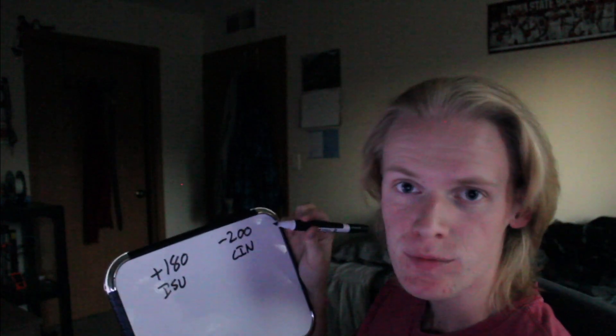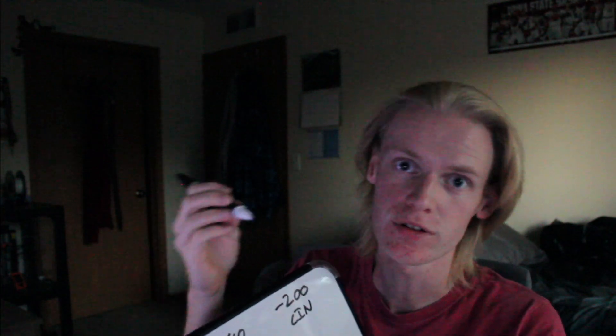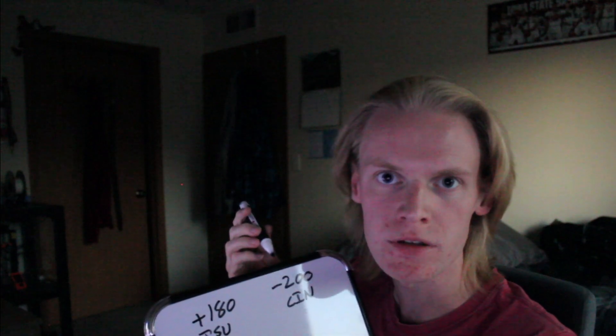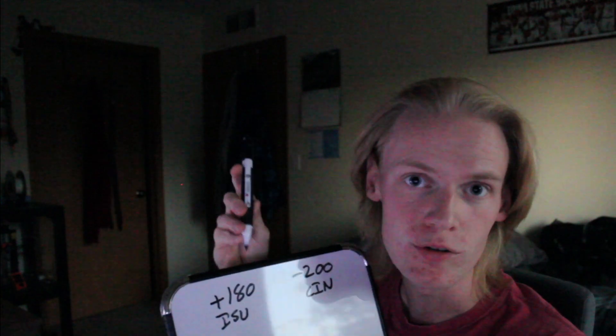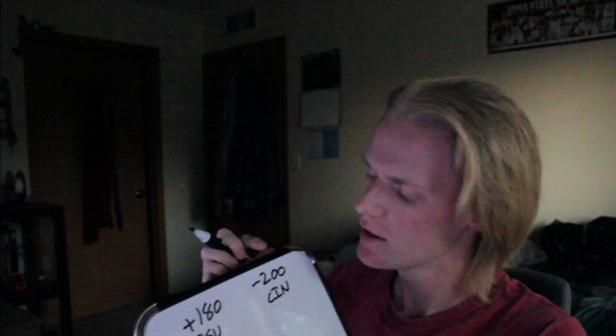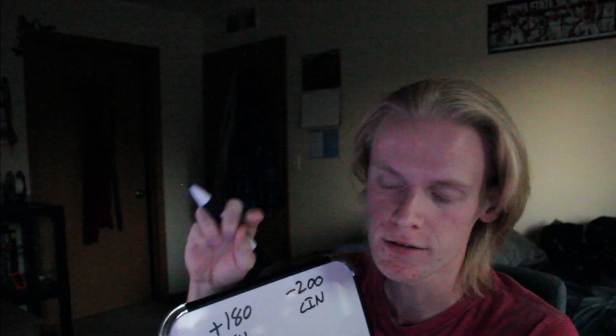Negative just means that bet is more likely to actually occur, so you're going to be getting less money. There's a formula to calculate it — it's not as straightforward as just looking at it and doing the $100-wins-$180 thing. There's a bit more math and fractions that I don't know off the top of my head, but you don't need to know that.